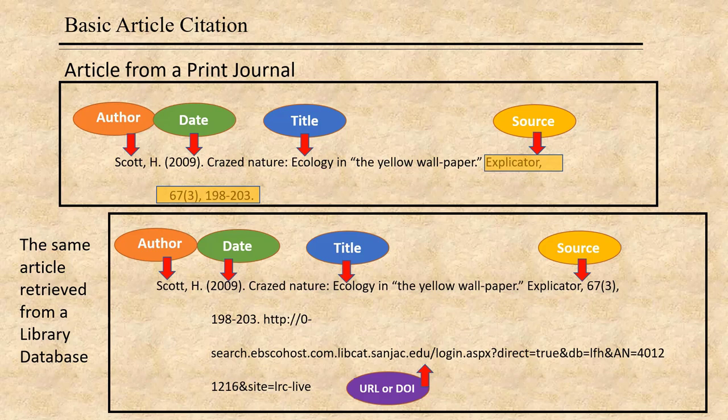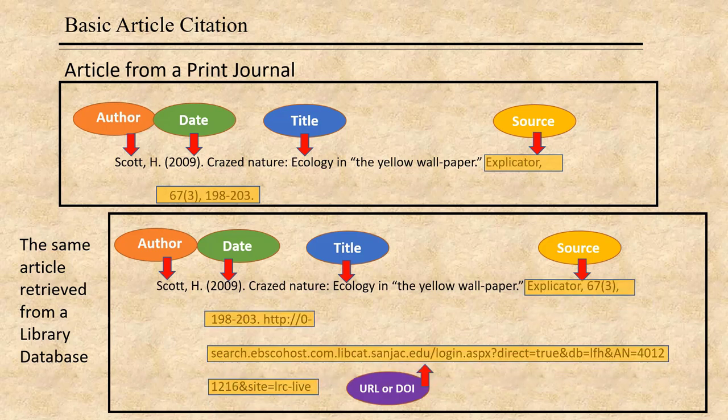The same article retrieved from a library database has exactly the same citation up until the source information. After the page numbers, there is the URL in this case, or the DOI if one had been provided.